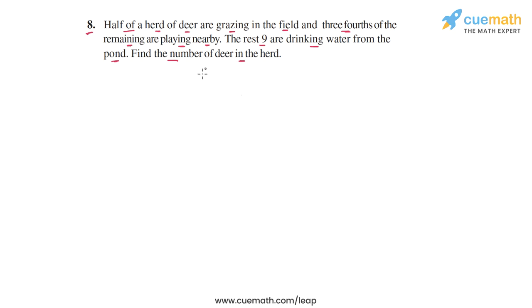The unknown in this case is the number of deer in the herd. So let's start by assuming this number to be some variable. Let's assume that the number of deer in the herd equals some variable x.